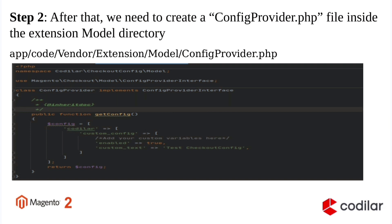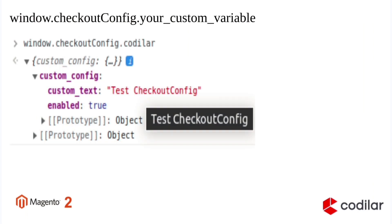Step 2: After that we need to create a ConfigProvider.php file inside the extension model directory, that is app/code/vendor/extension/model/ConfigProvider.php. This ConfigProvider.php will implement the ConfigProviderInterface that is defined under Magento/Checkout/Model/ConfigProviderInterface. We will call a getConfig function, and under that it will return an array with our custom checkout config. In the checkout page, in the browser console we can call window.checkoutConfig.yourcustomconfig variable to see all the variables we have defined.